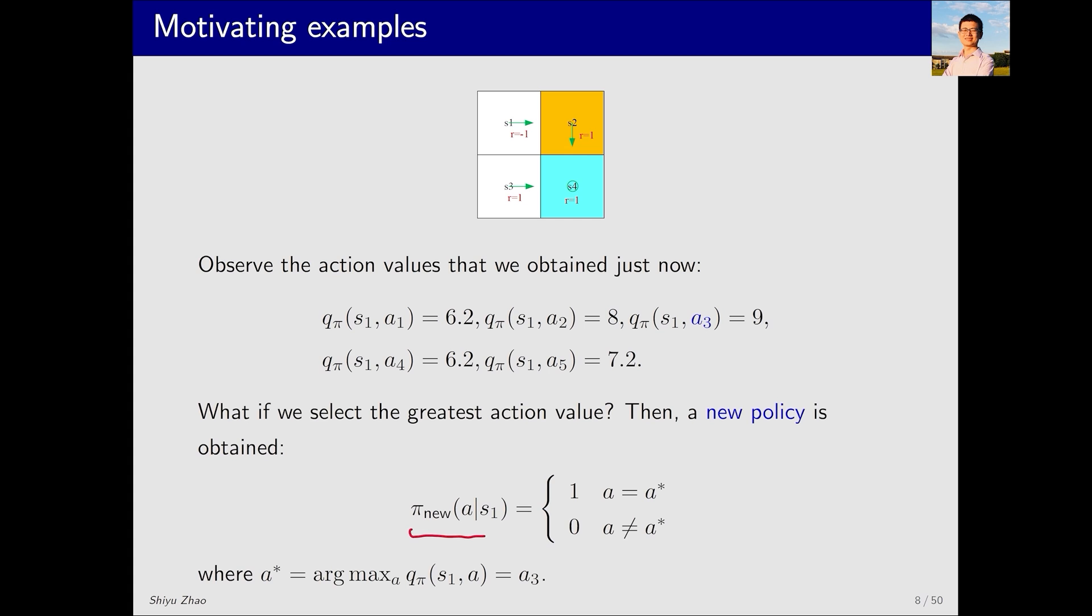Specifically, this new policy at s1 assigns a probability of 1 to action a star and a probability of 0 to all other actions, indicating that this new policy would definitely choose a star. What is a star? It corresponds to the action with the highest action value, which in this example is a3. Therefore, while the current policy moves right, the new policy pi nu would move down. As you can see, moving right is not as good as moving down since moving down can avoid the forbidden area.